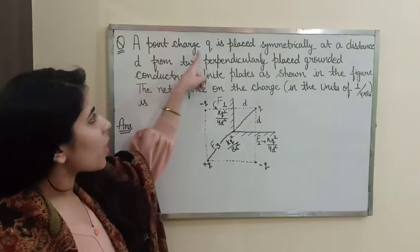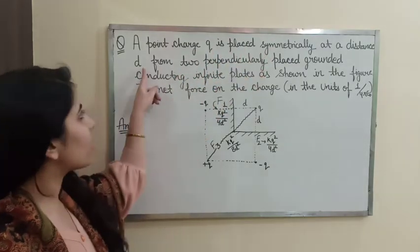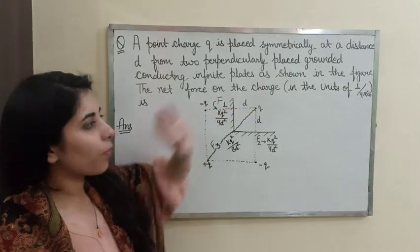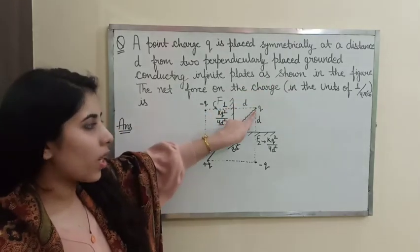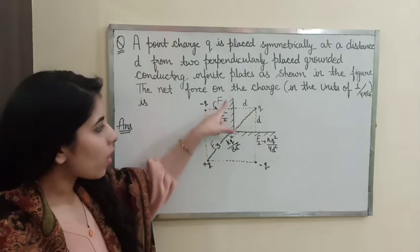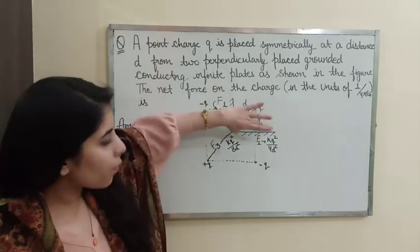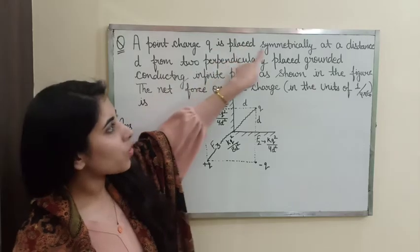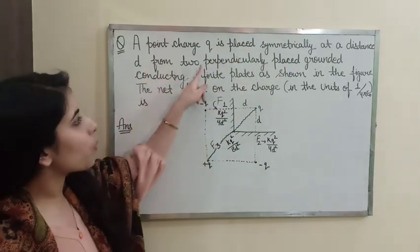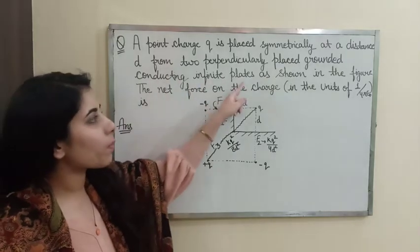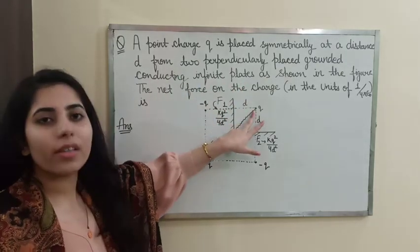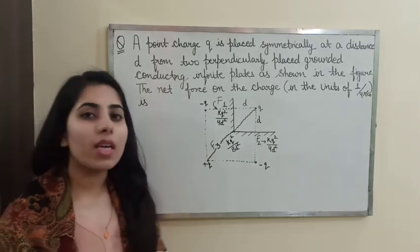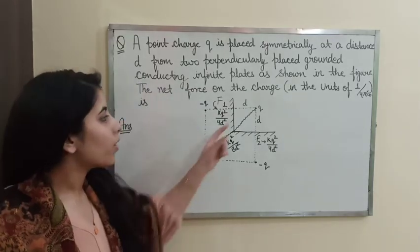Our question is: a point charge Q is placed symmetrically at a distance d from two perpendicularly placed grounded conducting infinite plates, as shown in the figure. Basically, they are talking about this charge Q which is symmetrically present away from the two infinite grounded conducting sheets. The question asks us to find the net force on this charge Q.